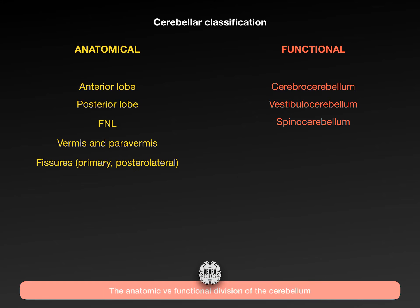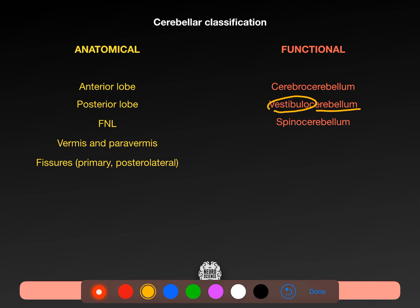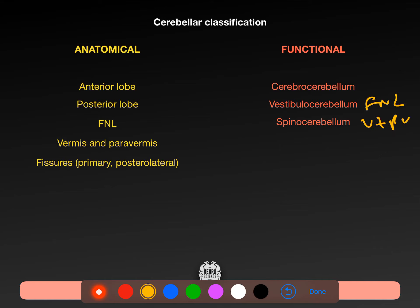Your vestibulocerebellum: you have four vestibular nuclei - two in the pons and two in the medulla, straddling the pontomedullary junction in the lateral posterolateral aspect of the medulla. Most of them communicate with the cerebellum and will inform it of vestibular function - balance and a bit of auditory stuff as well. The spinocerebellum is the vermis and paravermis. The flocculonodular lobe is the vestibulocerebellum, and the rest is the cerebrocerebellum.